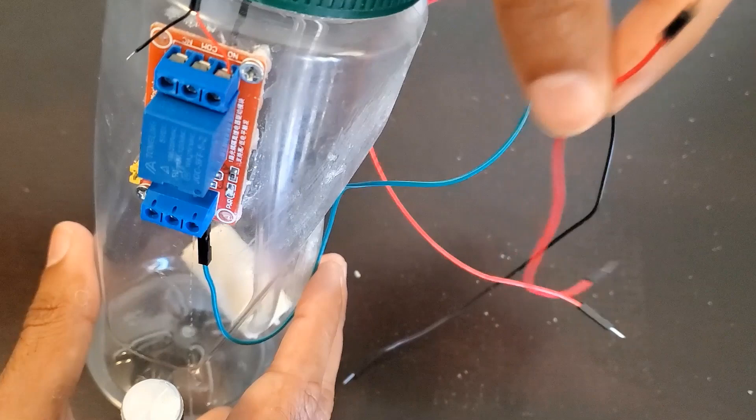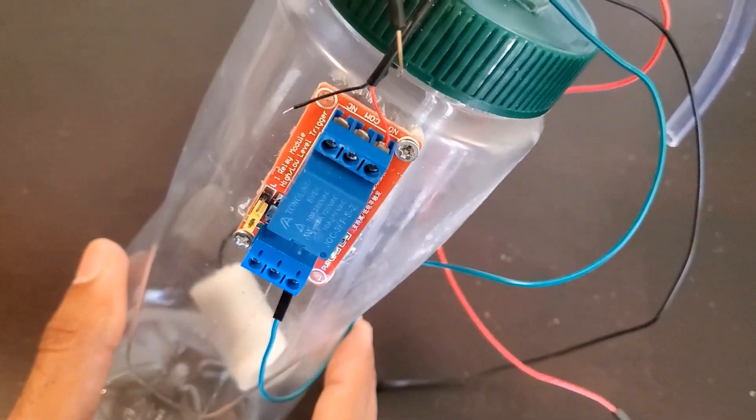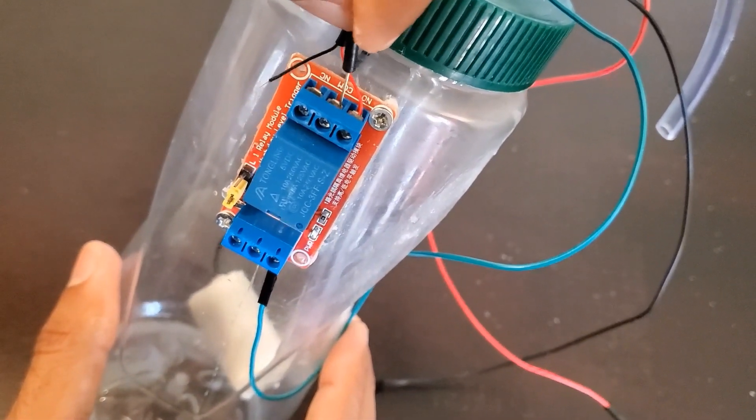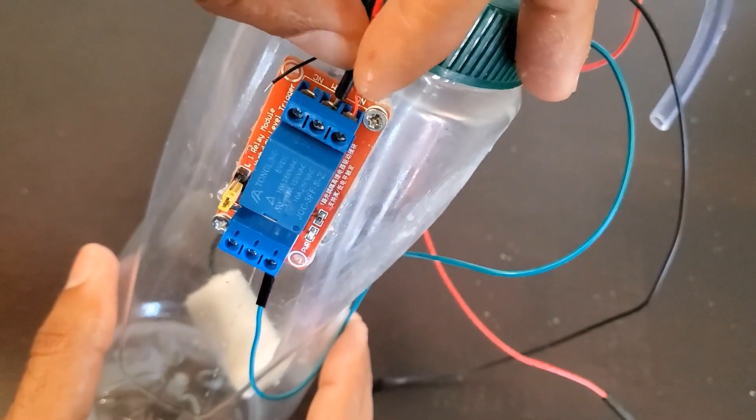Then you need to take a red jumper wire and wire it to the common, labeled COM, on the relay.